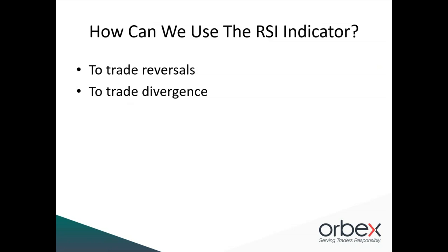As with all momentum indicators, the most common trading methods using the RSI apply to reversals and divergences. These are the two methods we're really focusing on — trading reversals and trading divergences. For example, an RSI reading of 70 signals overbought momentum, so looking for selling opportunities based on these readings, anticipating a correction, can be a simple yet effective approach. Vice versa, looking for buying opportunities when the indicator gives an oversold reading.